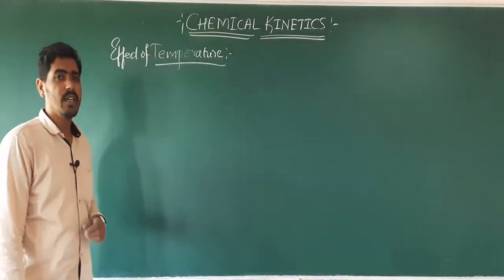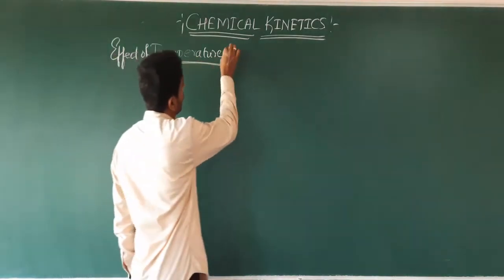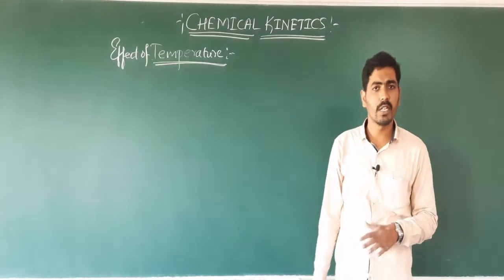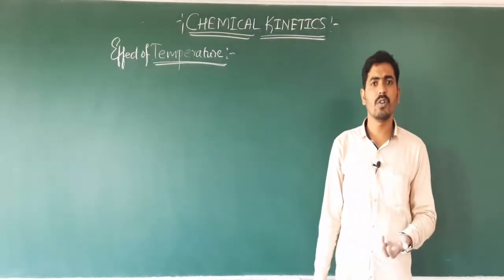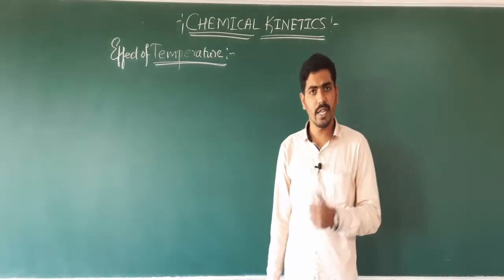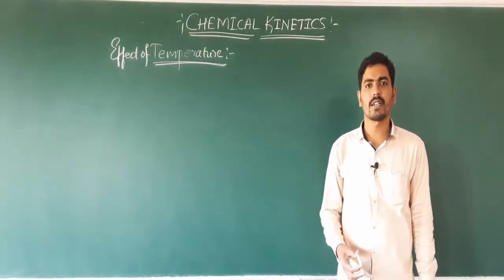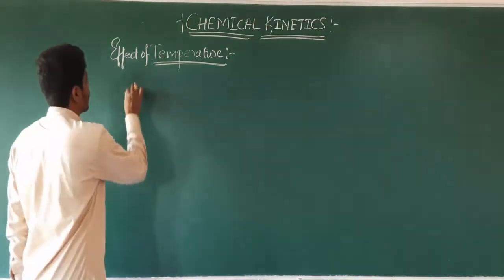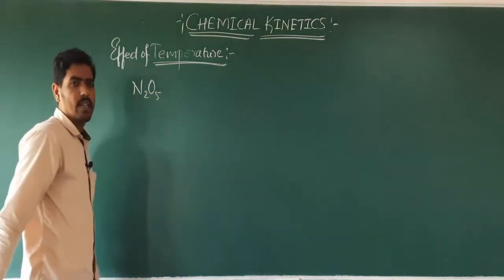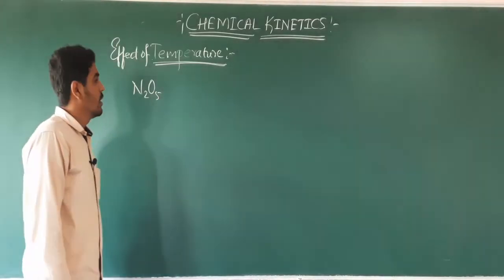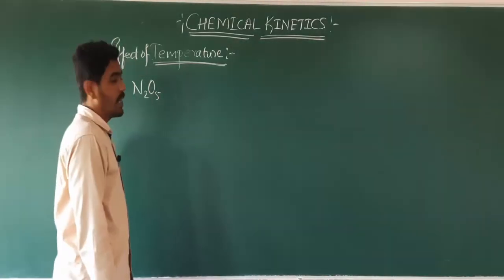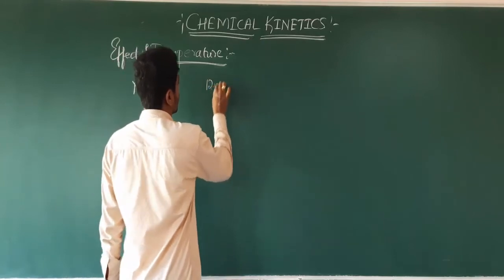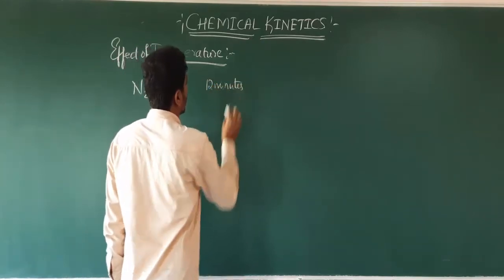The second factor which affects the rate of reaction is temperature. What happens if we increase or decrease the temperature? Let us consider an example with N2O5, an oxide of nitrogen, which undergoes decomposition.